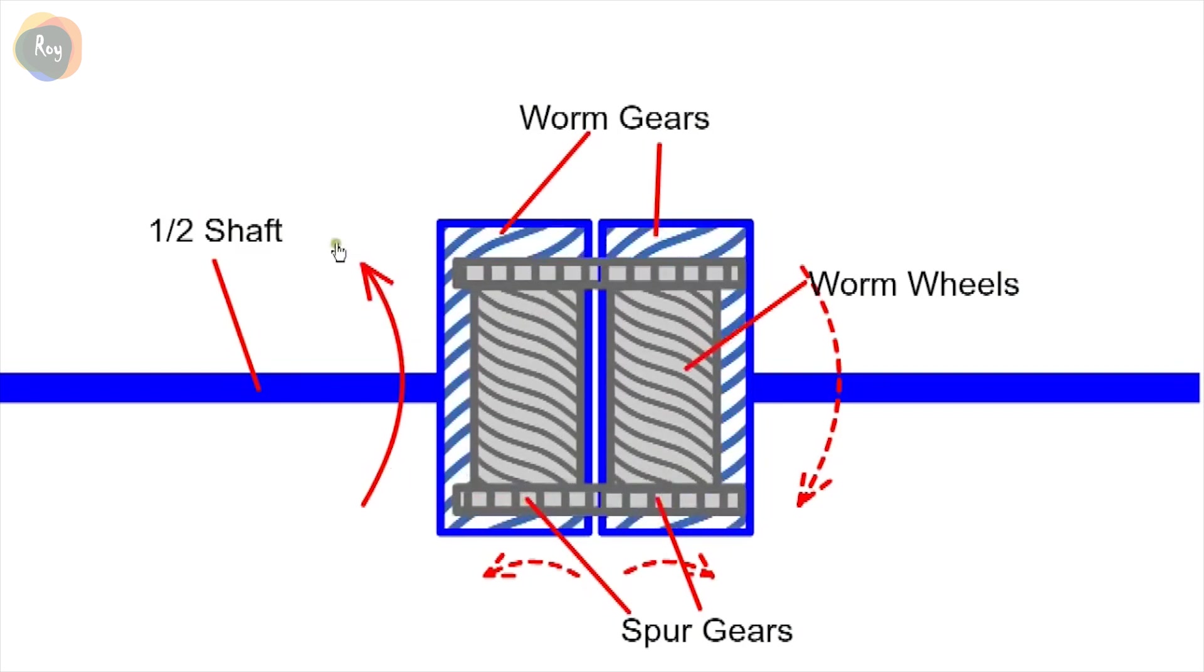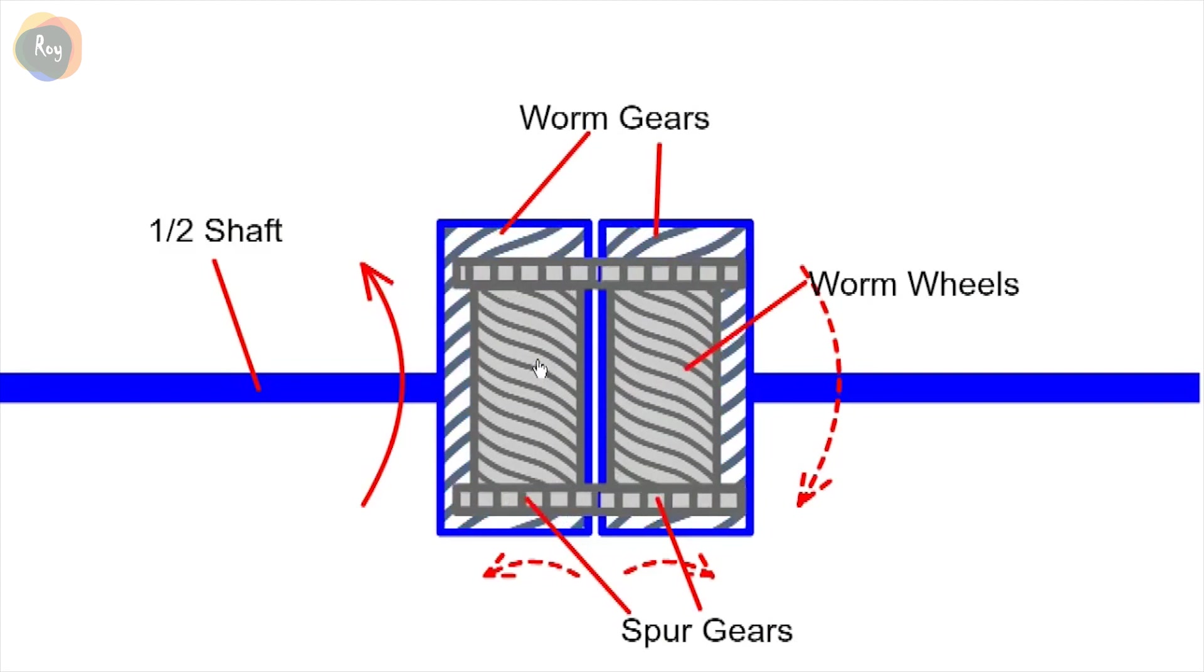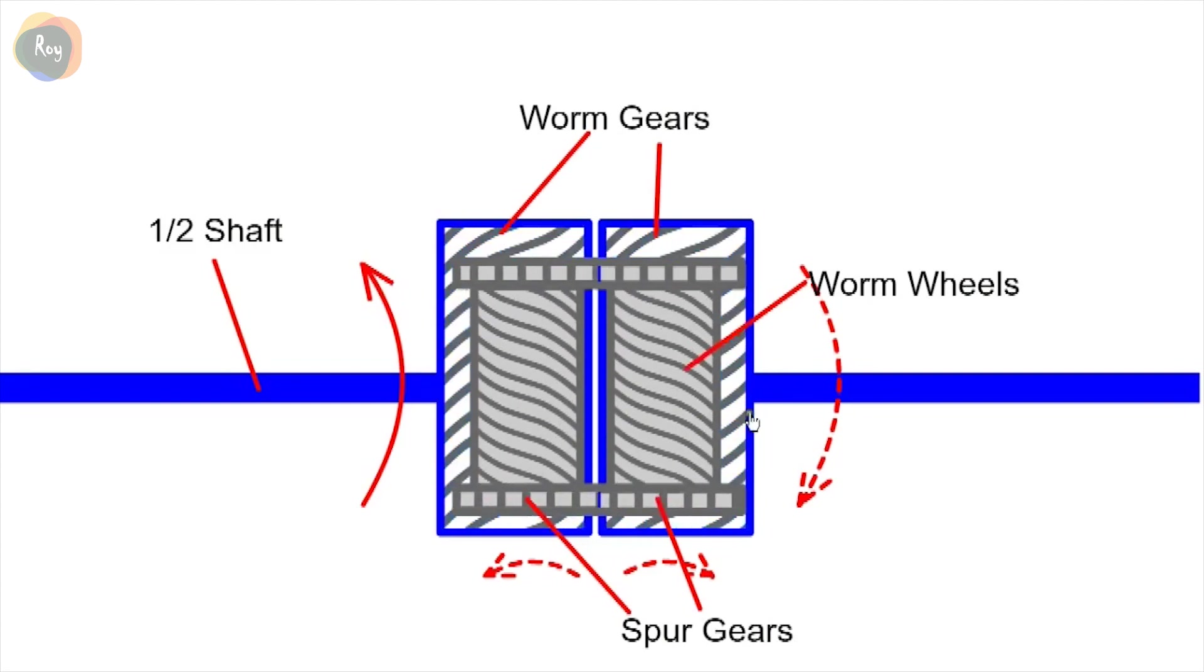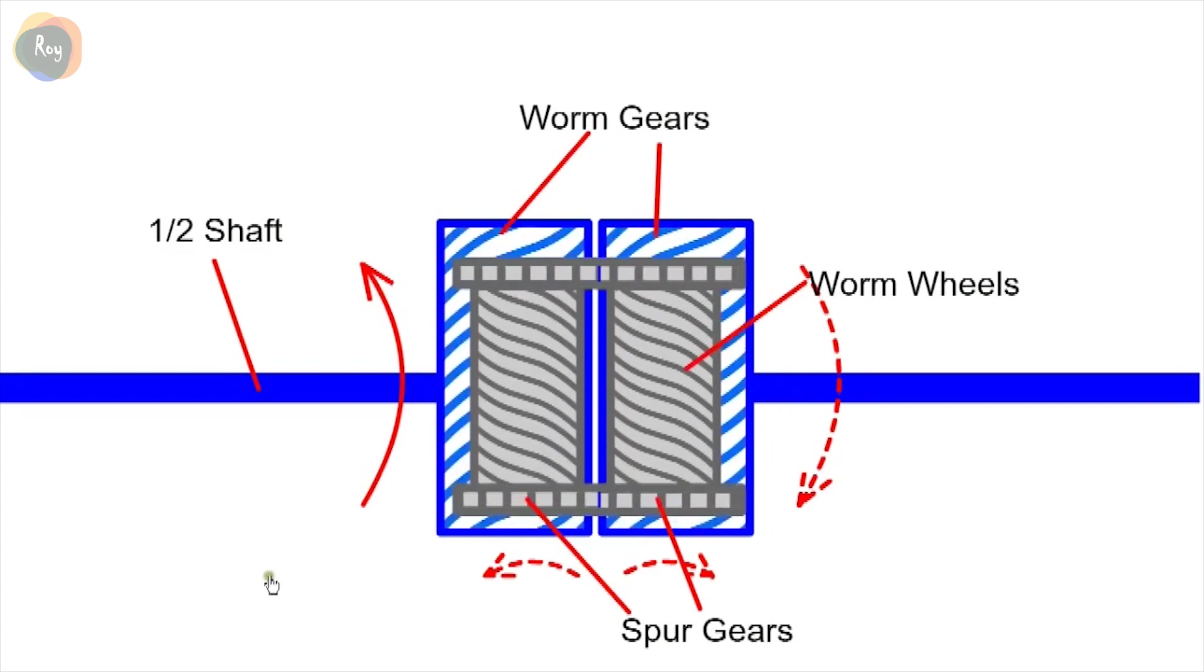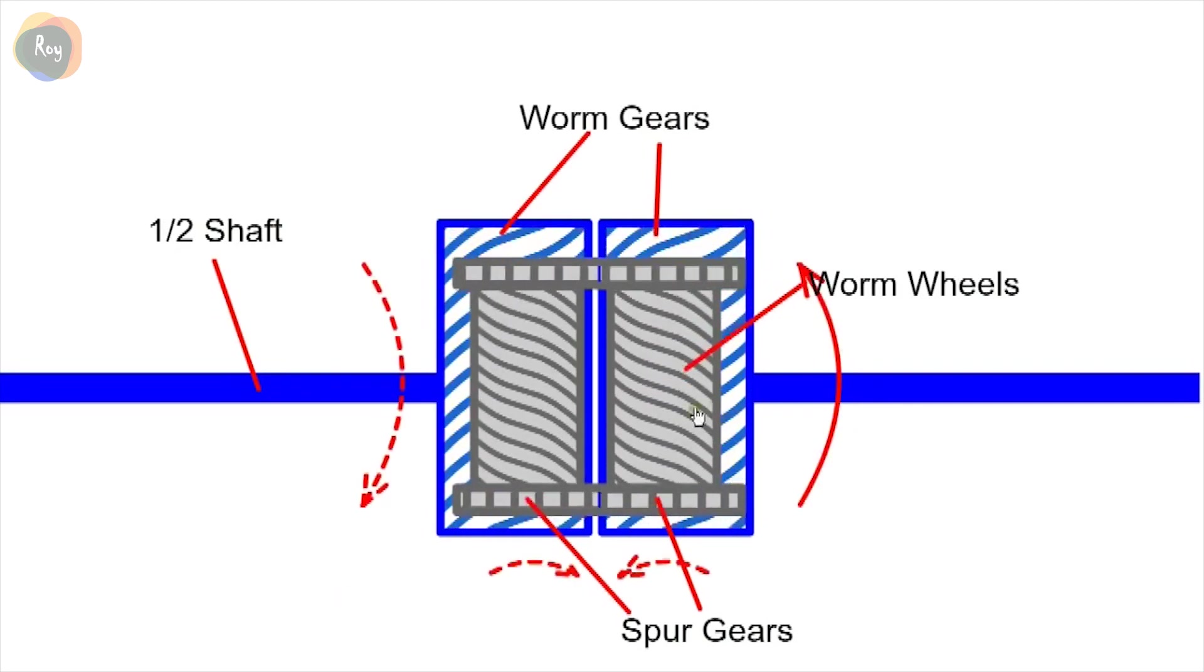If the left wheel is rotated in this direction, it will drive the worm, which in turn will drive the other wheel via the spur gears. We'll have a similar effect if we rotate in the opposite direction.